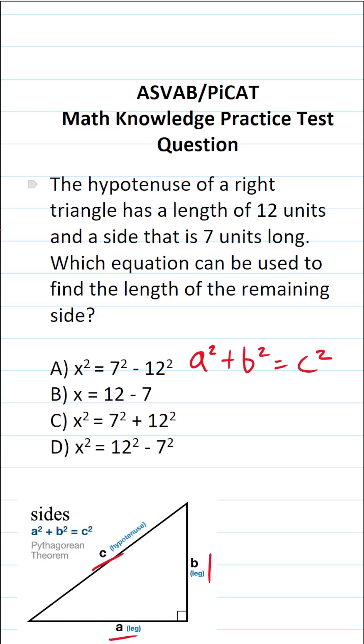In this case, we know that the hypotenuse has a length of 12 units, so C here is going to be 12. And we know one of the legs is 7 units, so I'm going to say A is going to be 7.